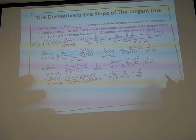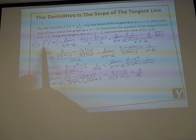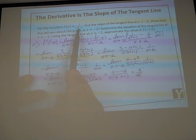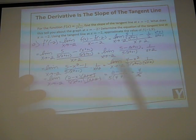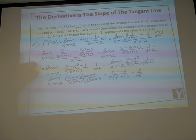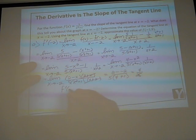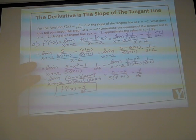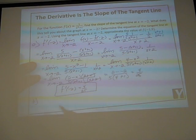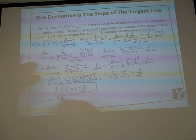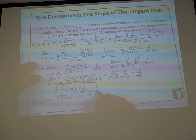The slope of the tangent line to this function when x = −2 equals 4/25. In other notation, f′(−2) = 4/25. Since the follow-up question asks what this tells us about the graph: because f′(−2) is a positive number, the function is increasing at x = −2.